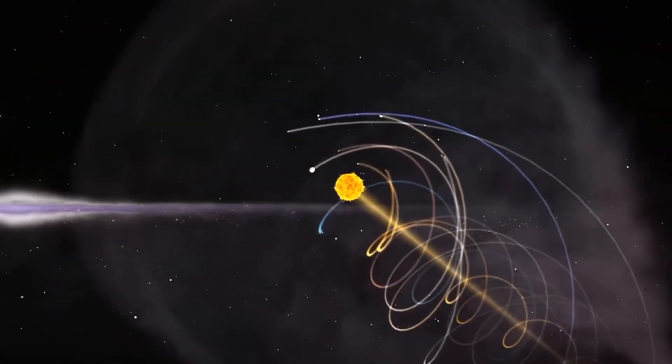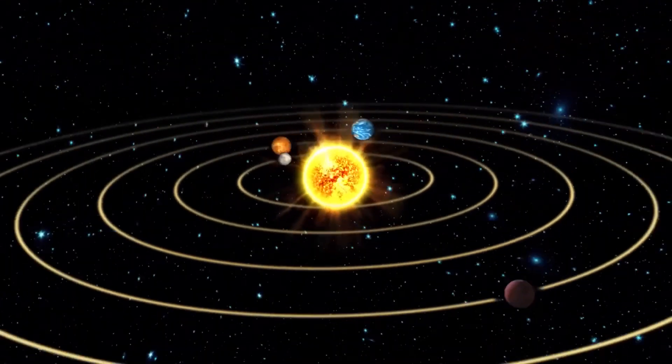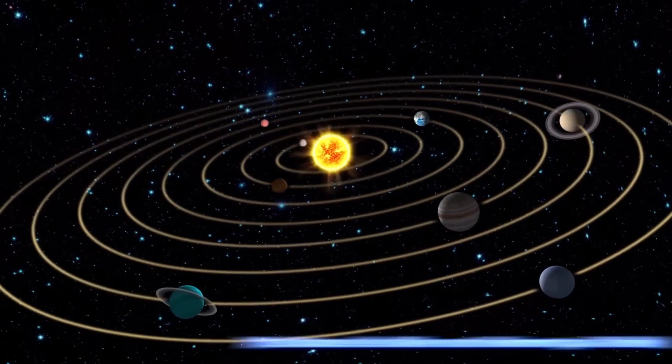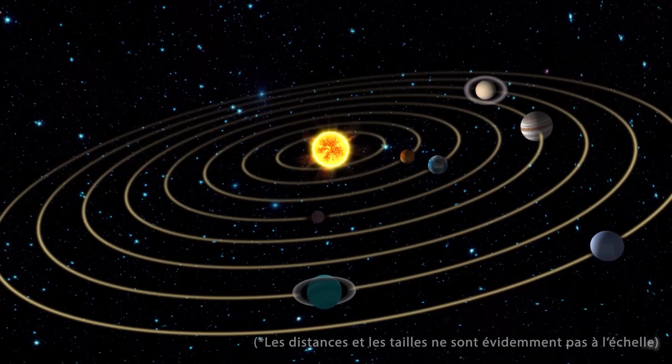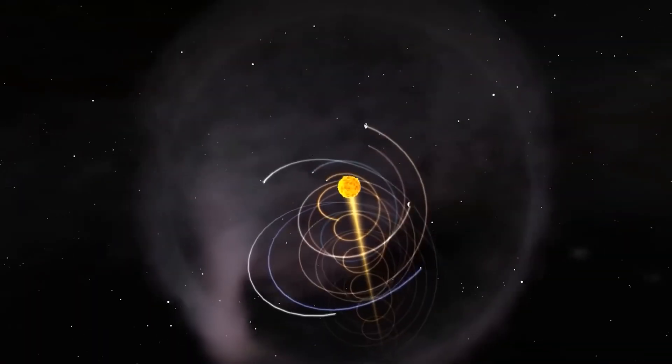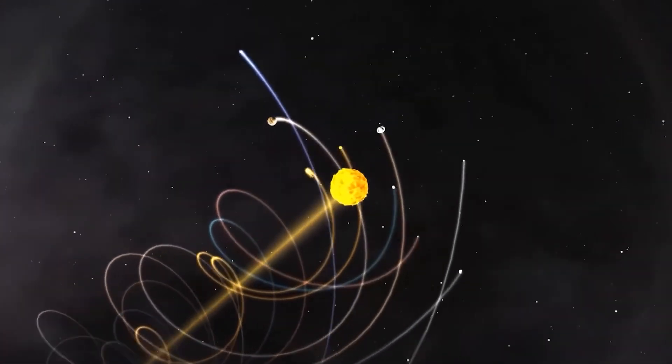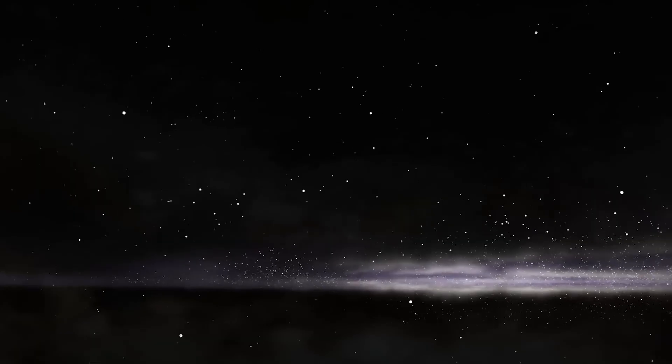When we visualize Earth's path through space, it is customary to use this model arranged in a plane, with the stationary sun at the center and the other planets of the system orbiting around it. Except that this representation of our movement is only valid if we center on our star. However, it is not stationary in space. It moves at a speed of 790,000 kilometers per hour around the center of our galaxy, the Milky Way.